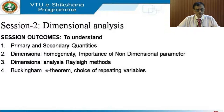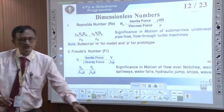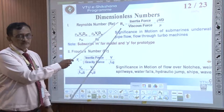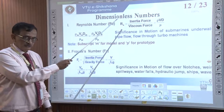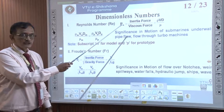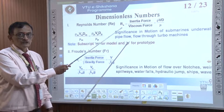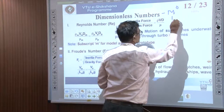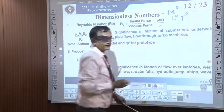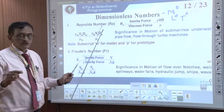Beyond that, the discussion is on non-dimensional parameters. We will now see this dimensionless number. As I mentioned earlier, these dimensionless numbers are derived to correlate a physical phenomenon independent of their units. It means these dimensionless numbers, which are M to power 0, L to power 0, and T to power 0, are dimensionless. We will take a very important one first: Reynolds number.